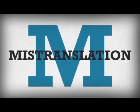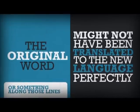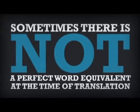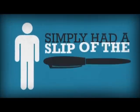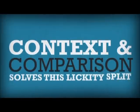On to the M. M is for mistranslation. This is when the original word might not have been translated to the new language perfectly or something along those lines. You've got to realize that sometimes there's not a perfect word equivalent at the time of translations, or that the translator simply had a slip of the pen or used a word that perhaps could be translated in different ways. Context and comparison solves this lickety-split.